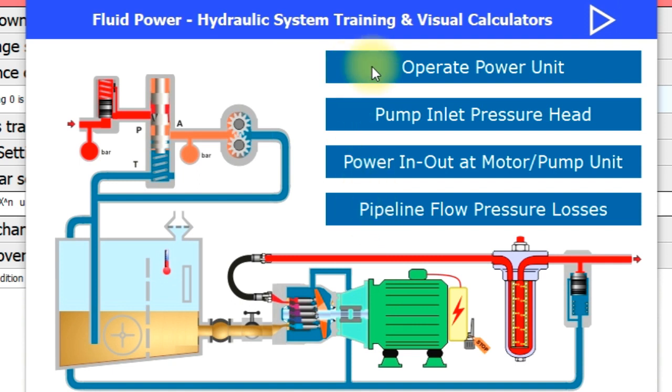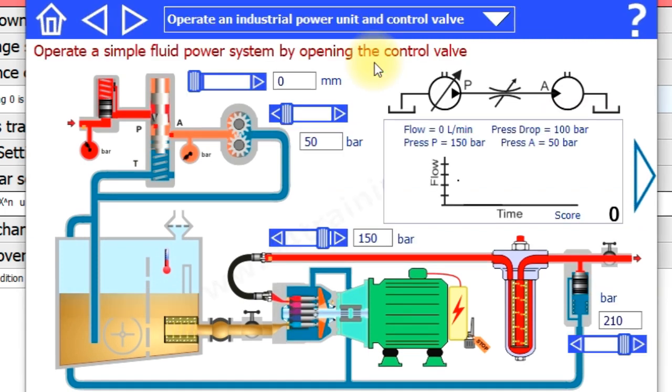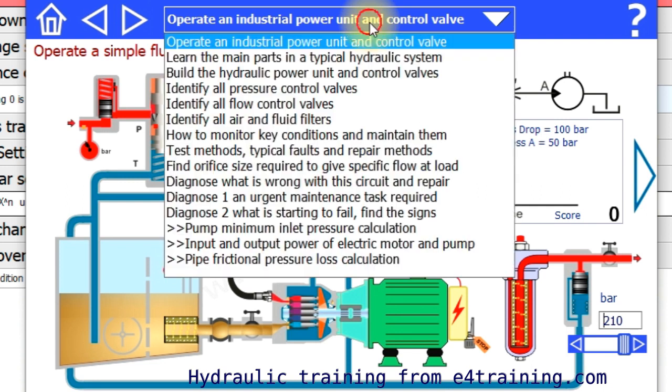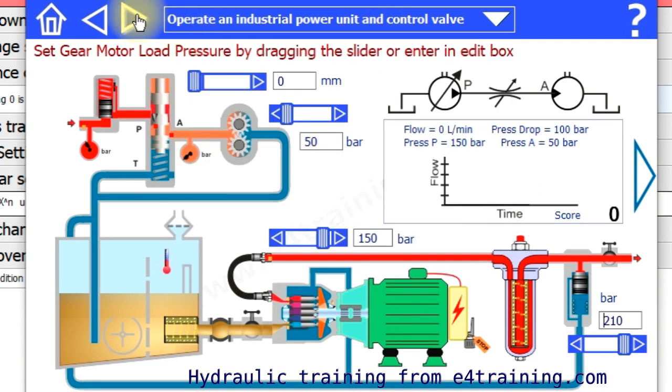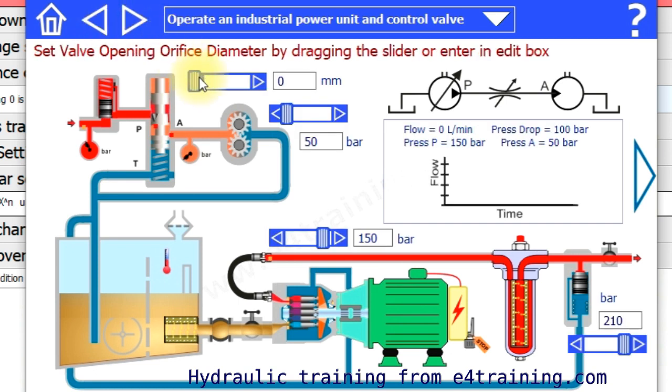We'll look at the first section which says to operate an industrial power unit. So we need to operate the system. We can see all the different sections in here, so the first section is to operate.